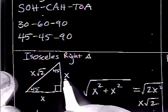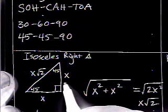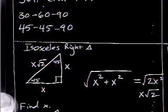Likewise, if you want to go backwards from x radical 2 back to the side length or a leg length, you have to divide by radical 2. So we'll do a couple examples here.